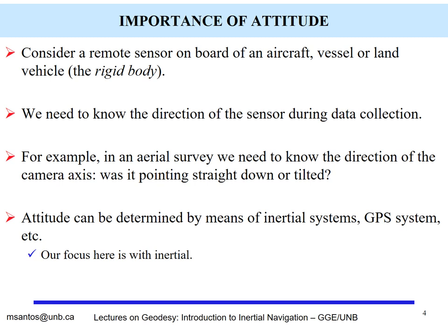Well, we need to know, for example, where the sensors point during data collection. So in a survey, if you want the camera pointing exactly vertical, we need to know the attitude. We can then answer the question of whether the camera was pointing straight down or was tilted.